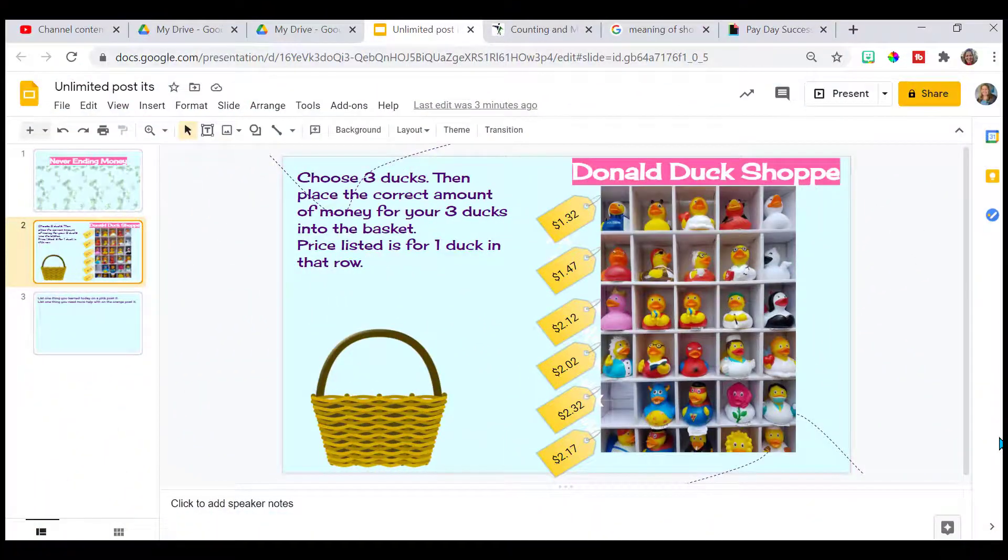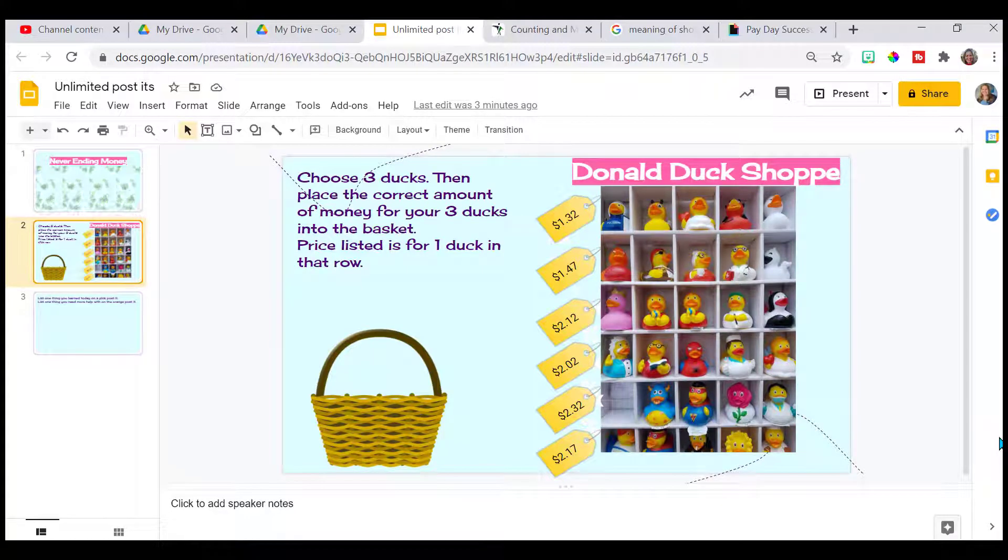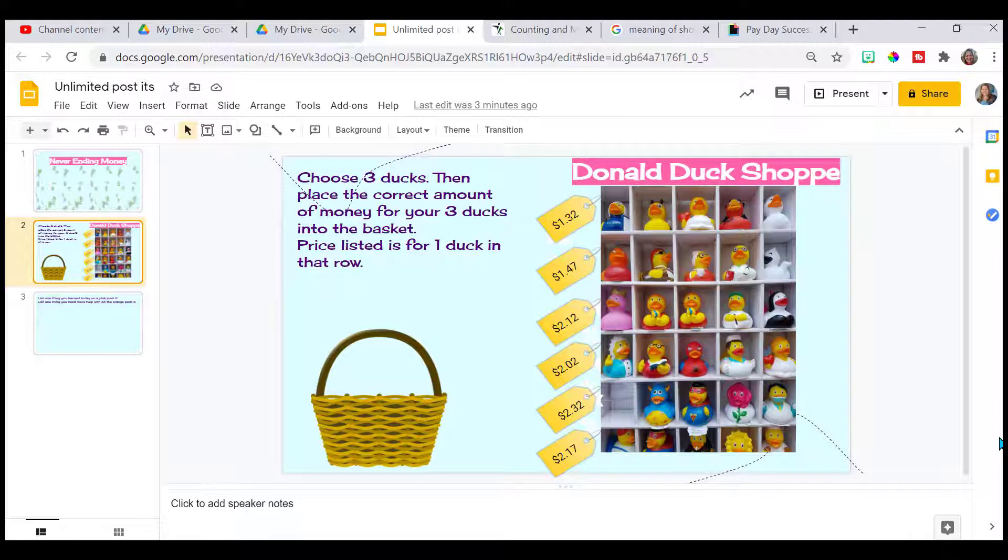So here I've set up the Donald Duck shop. This is where the students can go and purchase their little rubber duckies. I've set up the directions right there. They need to choose three and then put the money in the basket. This is all in the honor system. Now we just need the money.